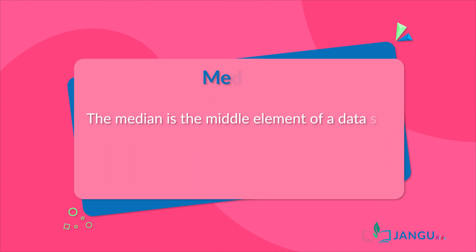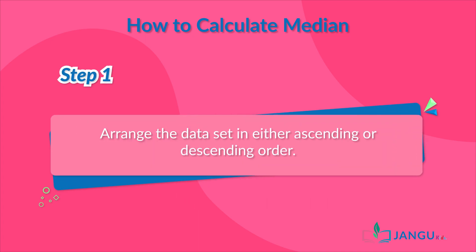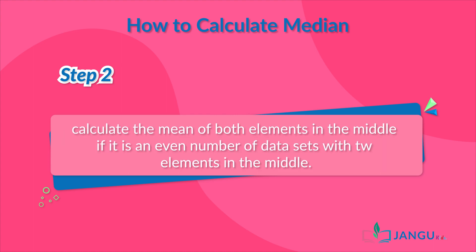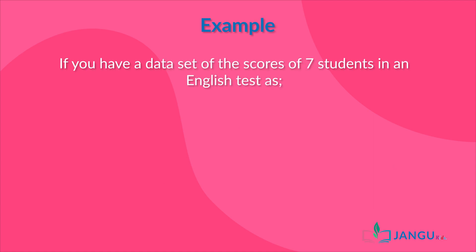The median is the middle element of a data set arranged in a given order, which could either be ascending or descending. To calculate the median of a data set, we simply arrange the data set in either ascending or descending order and then pick the middle element if it is an odd number of data values with only one element in the middle, or calculate the mean of both elements in the middle if it has an even number of data values. For example, if you have the scores of seven students in an English test as nine, four, six, ten, four, eight, and six,